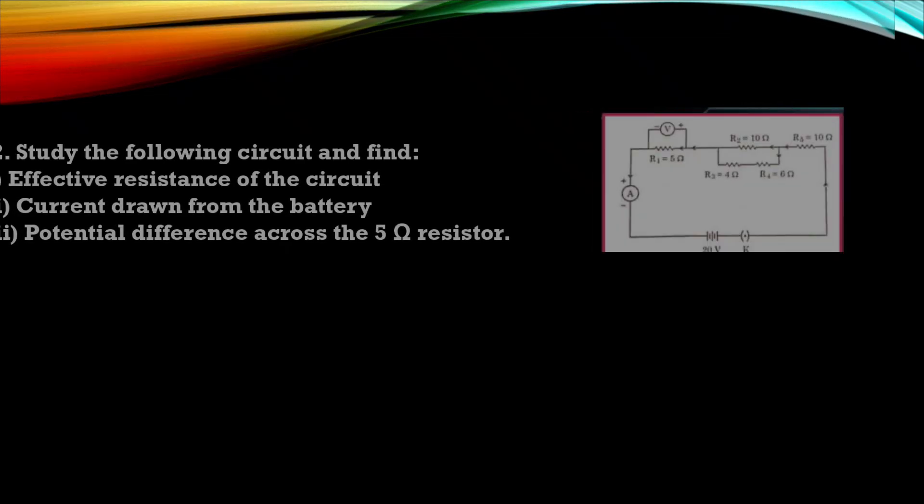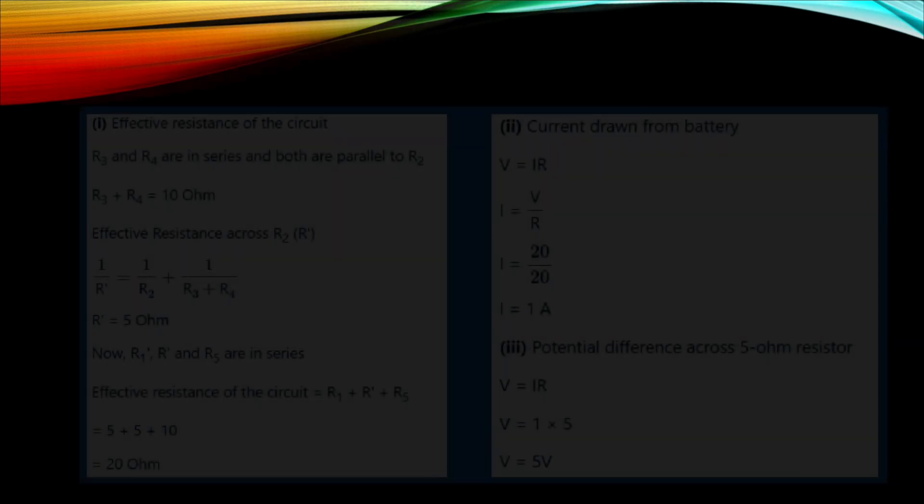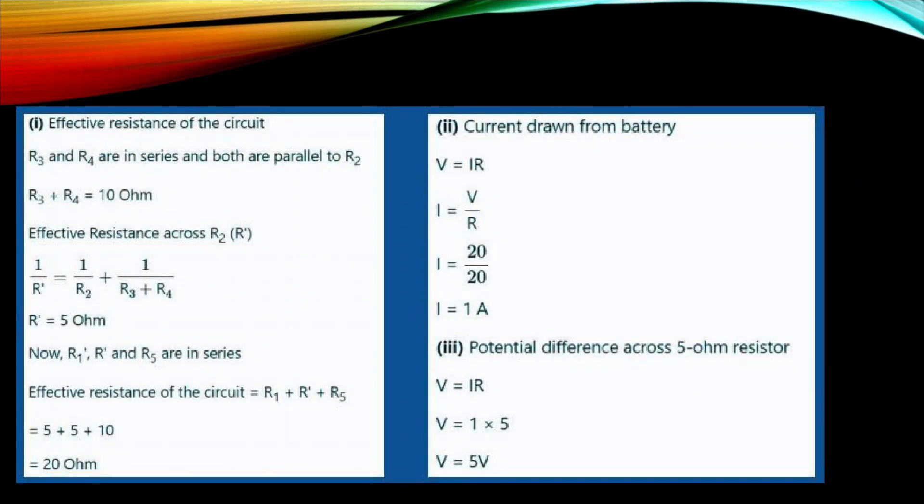Then question 22. Study the following circuit and find effective resistance of the circuit. Current drawn from battery. Potential difference across the 5 ohm resistor. So this is the solution for that numerical.